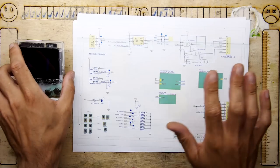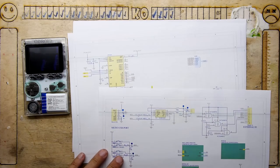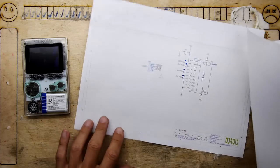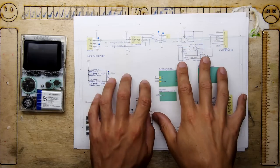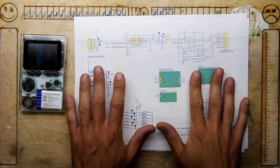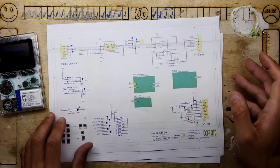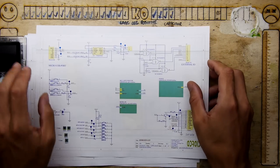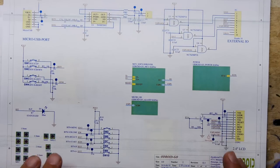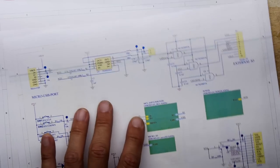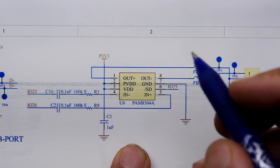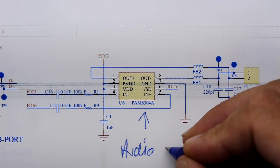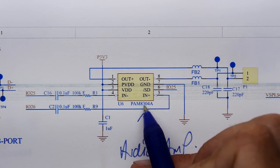First things first when working on something like this is to get the schematics. I've been on the Odroid GitHub — you get everything there — and if you want me to go through this one day please leave a comment below and I'll explain how an Odroid is built from schematics. If you skim through the schematic you'll find on sheet one of four, right in the top corner, this little component — it's the audio amp, using a PAM8304.